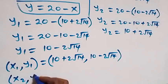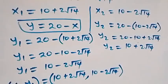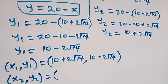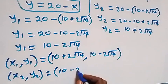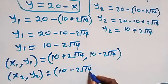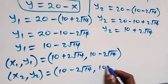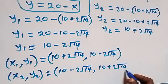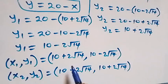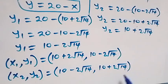So the second set of solutions is x2 equals to 10 minus 2 root 14, comma y2 equals to 10 plus 2 root 14. Notice the value of x in the first set is the same as the value of y in the second set, and vice versa.